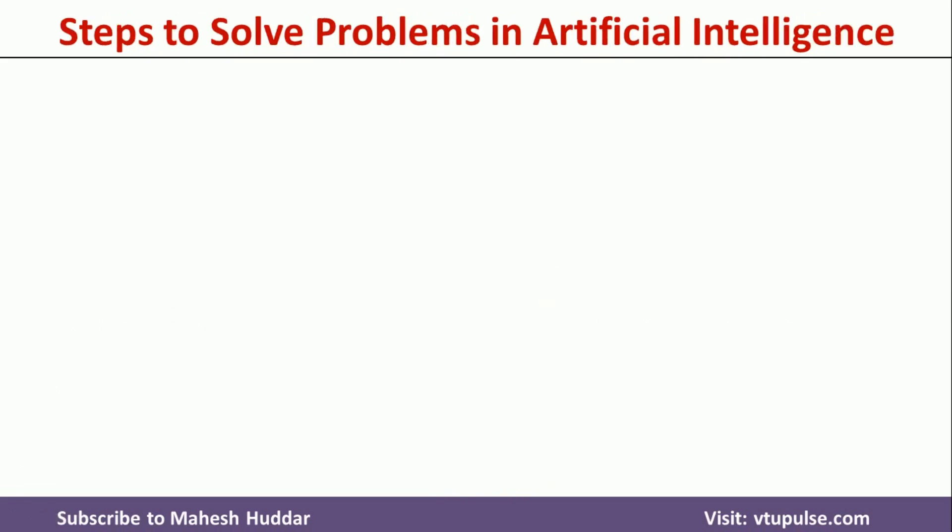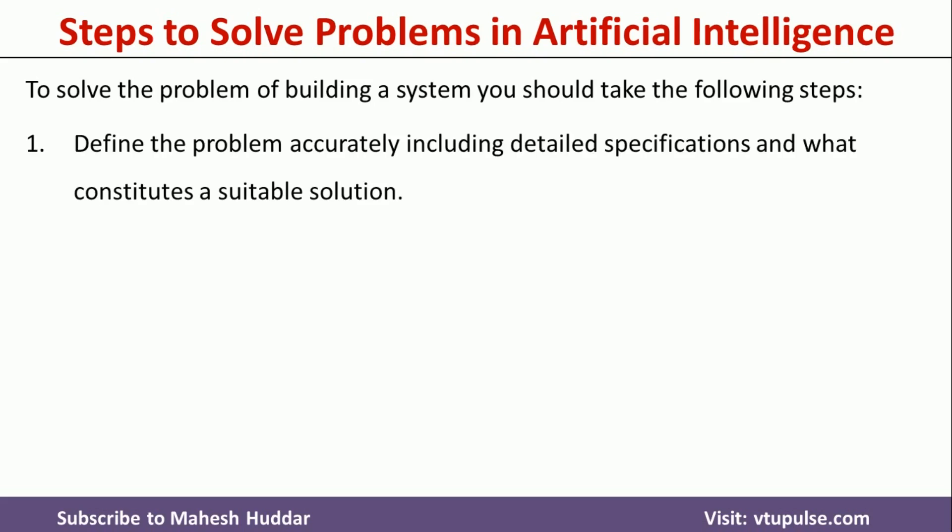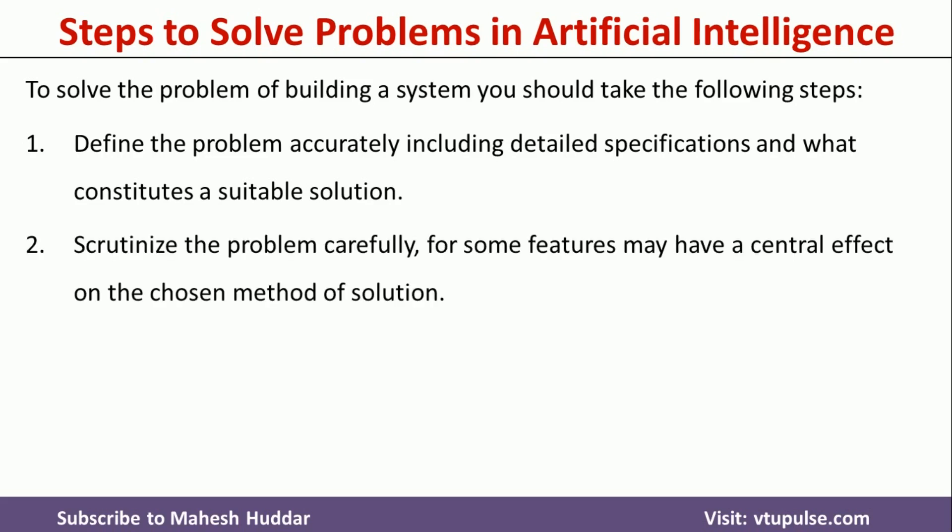Now we will see what are the different steps to solve a problem in Artificial Intelligence. To solve a problem in Artificial Intelligence, we have to follow a four-step process. The first step is to define the problem accurately, including the detailed specification and what constitutes a suitable solution. The next thing is to identify some of the features which can be used to solve that particular problem.